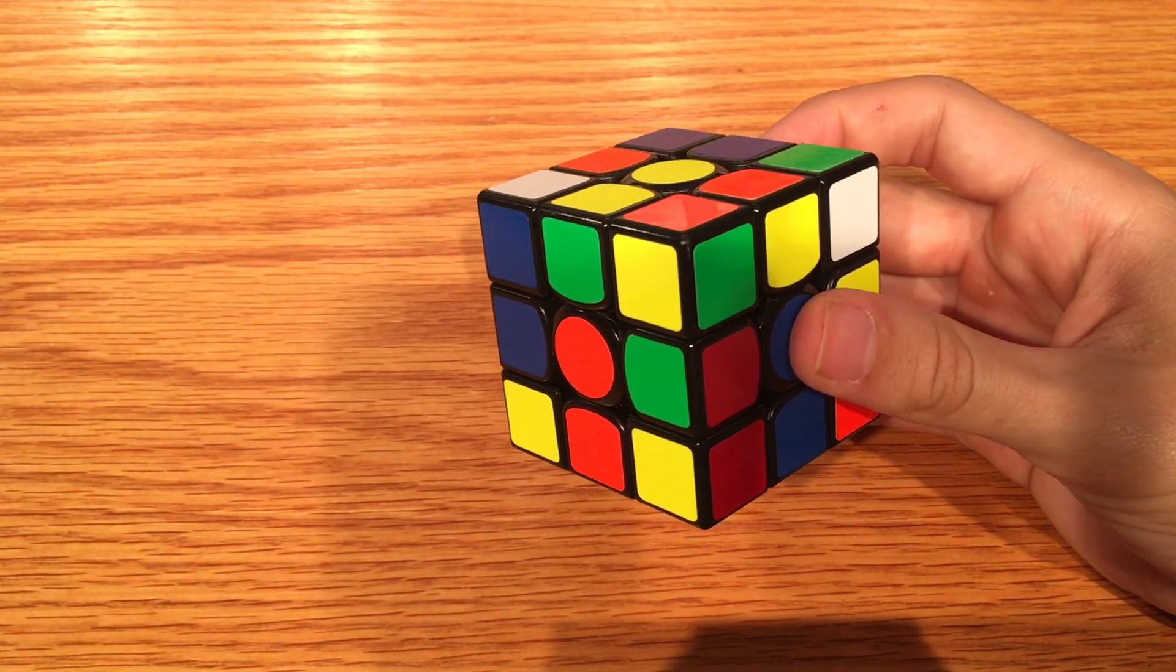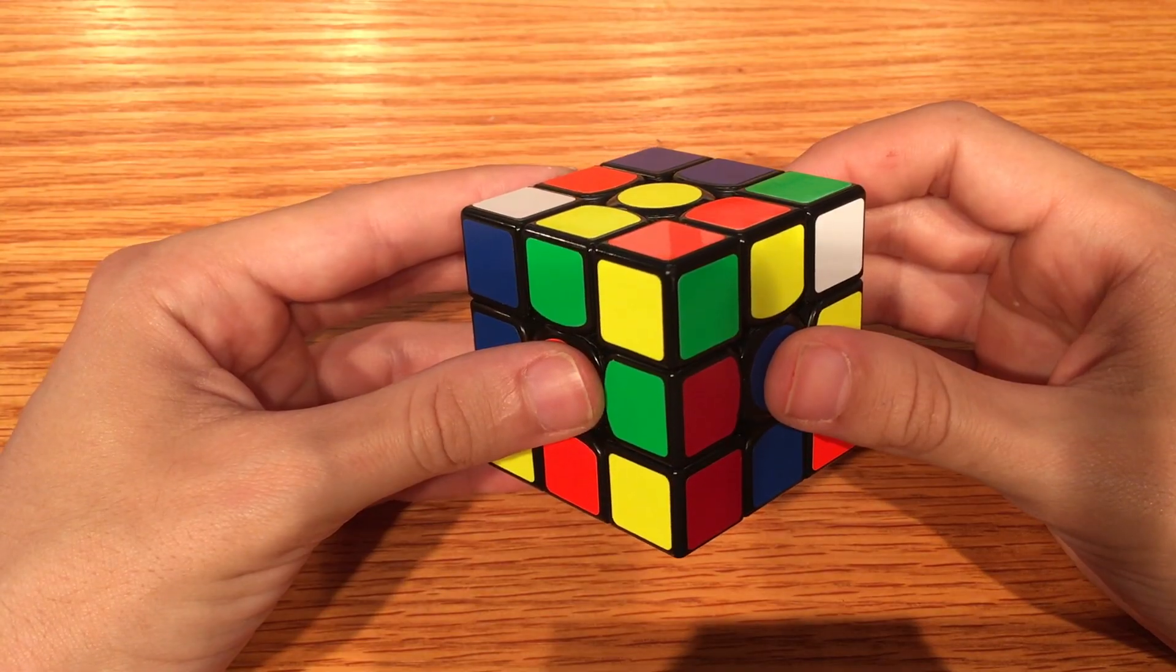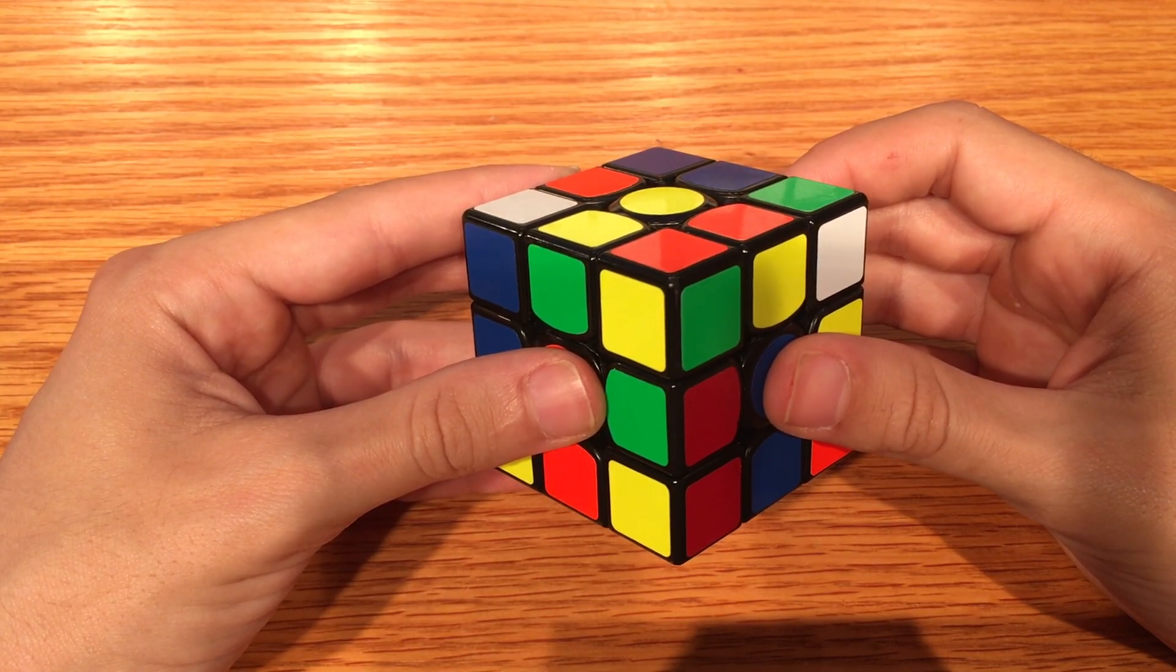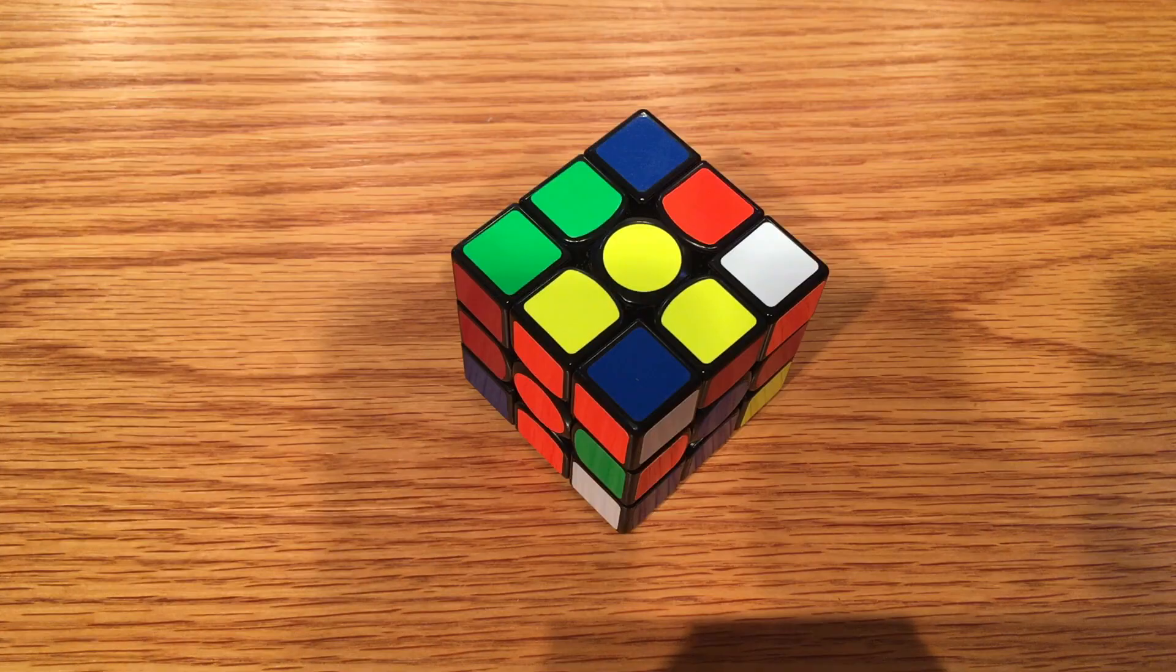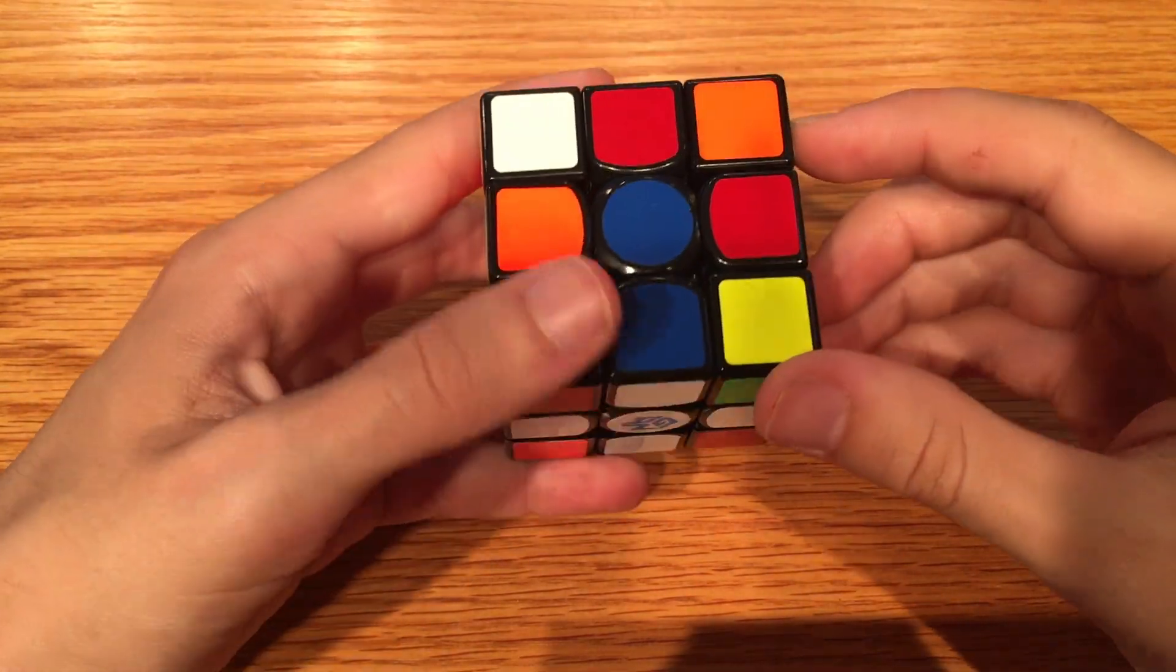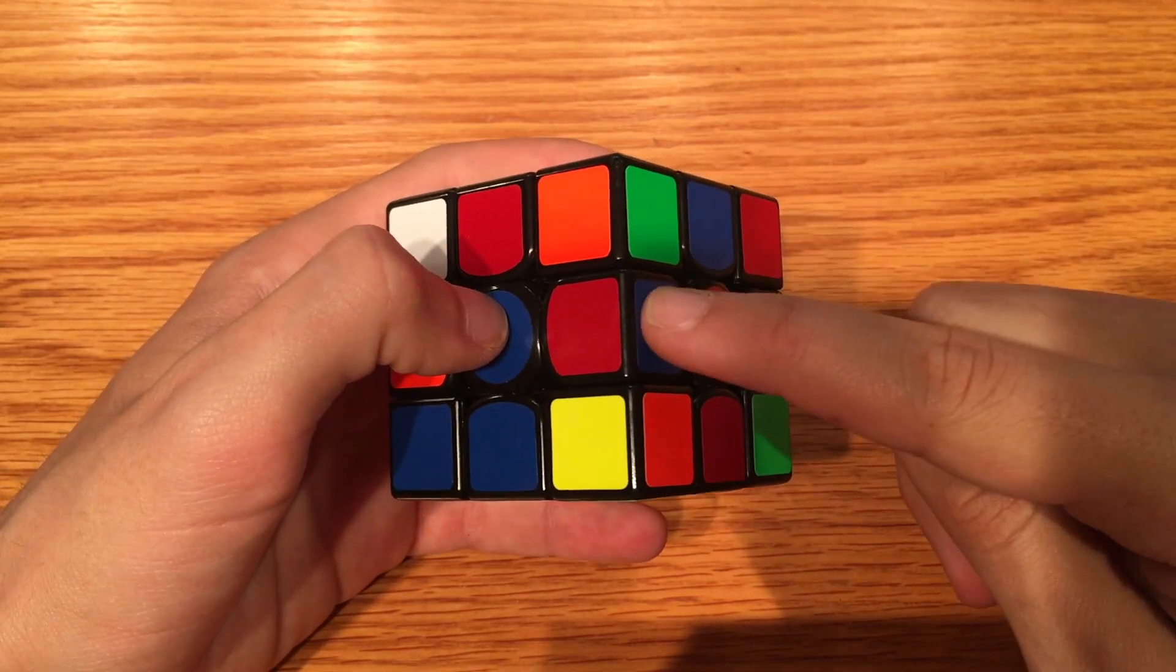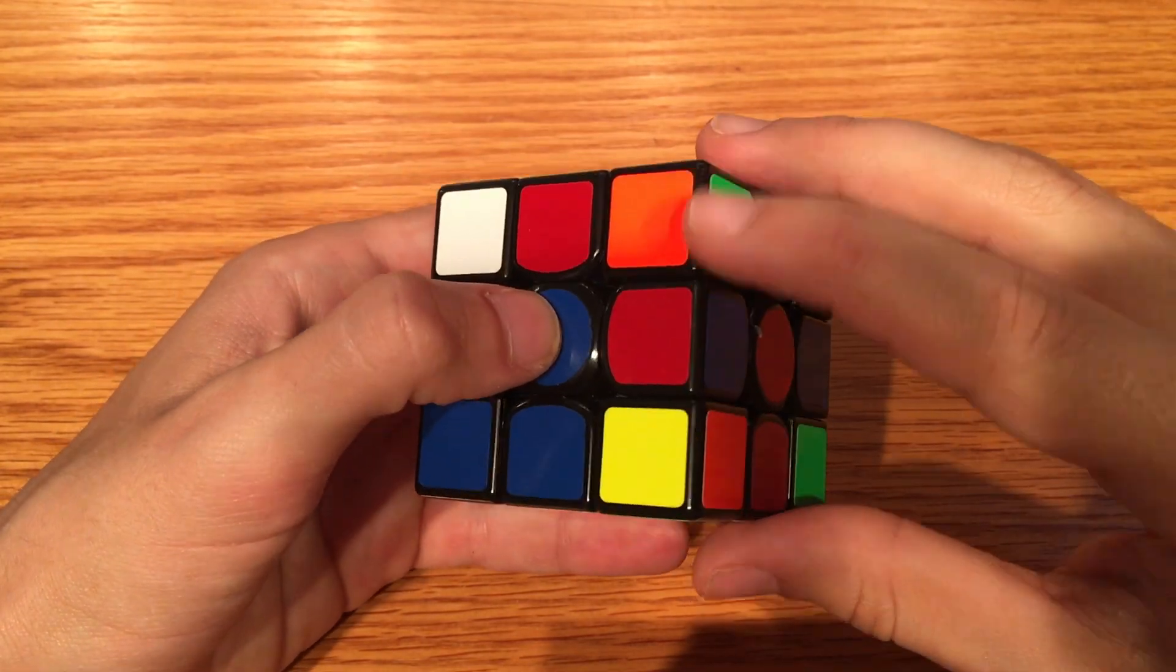There you have it. You should now be able to solve any F2L pair. Just to make sure, let's go over a worst case scenario. Okay, neither our edge nor our corner is on top. This is simply obstacle number one. So let's throw our edge up. We throw it up, move it out of the way.